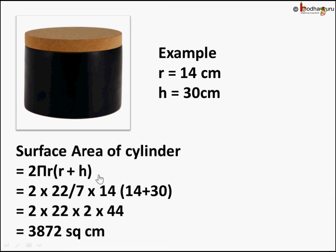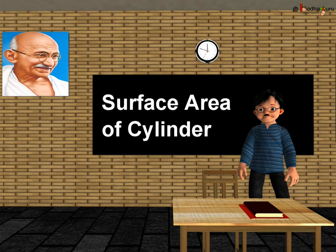So what we learned in this lesson is that the surface area of a cylinder is the sum of the area of its two circular sides and the curved face, which gives 2πR(R + H). That's all in this lesson, children. Have fun. Bye bye!